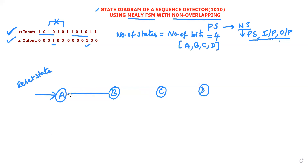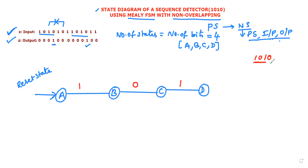Next, link the states in successive manner. Insert the bits to be detected on the transitions. The sequence is 1, 0, 1, 0 — these are the values of X to be detected in the input. The first bit is 1, the next is 0, the next is 1, and the last is 0. So the transitions between successive states carry these bit values.